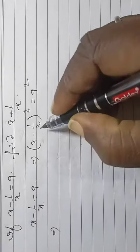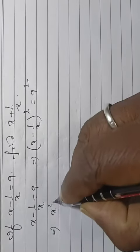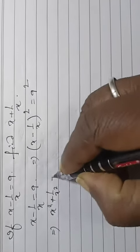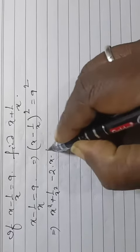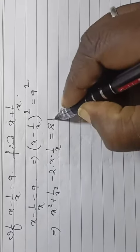Expanding using the identity: x square plus 1 by x square minus 2x times 1 by x is equal to 81.